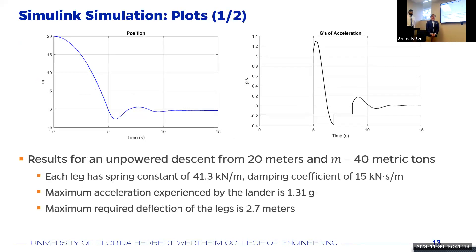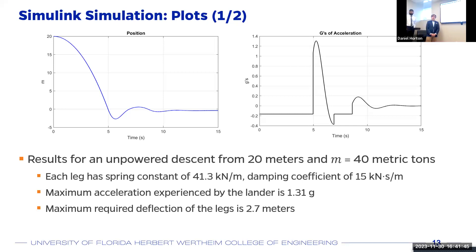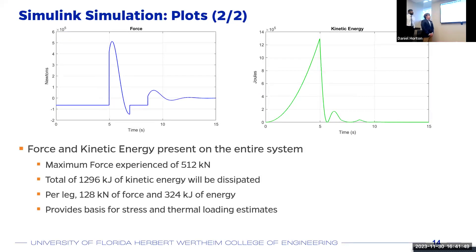Here we have results for a simulation of an unpowered descent from 20 meters with a mass of 40 metric tons. On the left is the position plot; on the right is the g-force plot. The maximum acceleration experienced is only 1.31 g's, which is less than what astronauts experience during takeoff. The maximum negative position value is 2.7 meters, meaning the legs must deflect at least 2.7 meters to avoid bottoming out. The maximum force experienced is about 512 kilonewtons, and approximately 1,300 kilojoules of kinetic energy must be dissipated by the legs. Per leg, that came out to 128 kilonewtons of force and 324 kilojoules of energy, used as first estimates in our stress and thermal loading calculations.